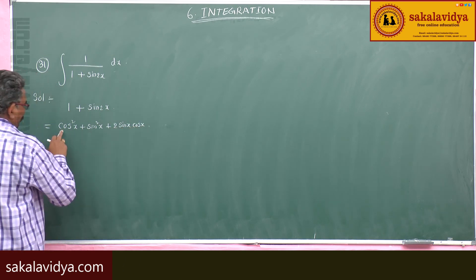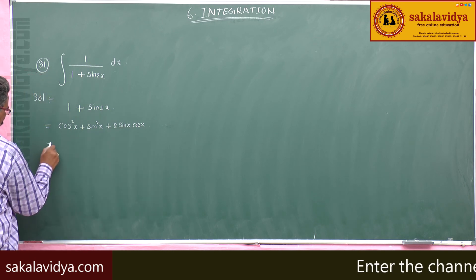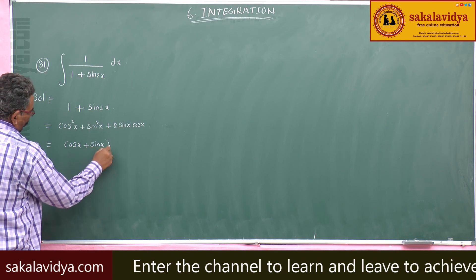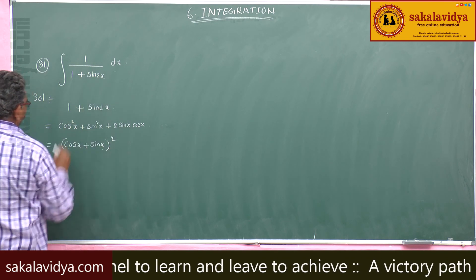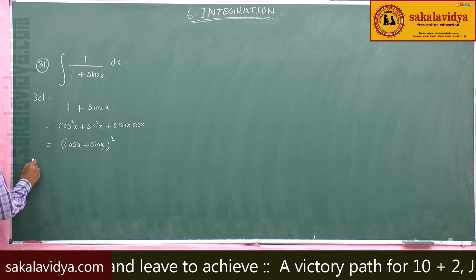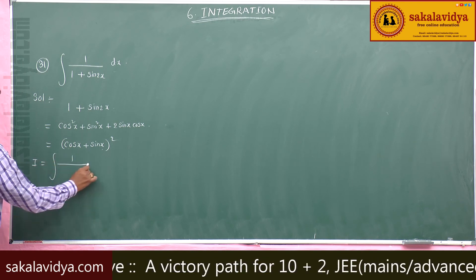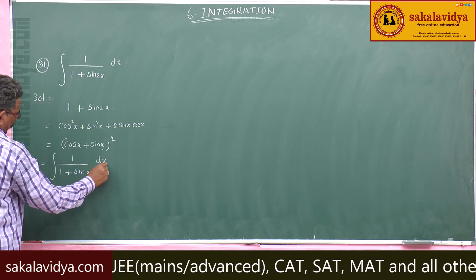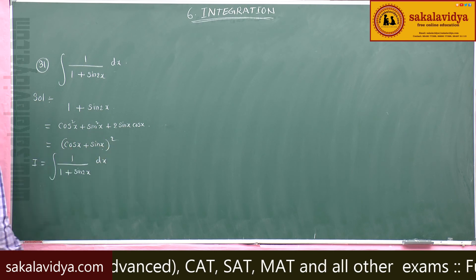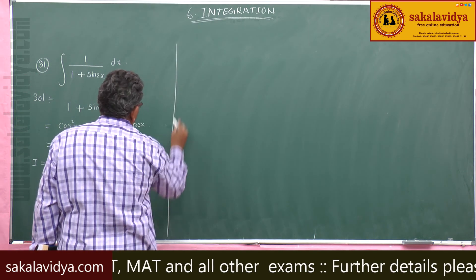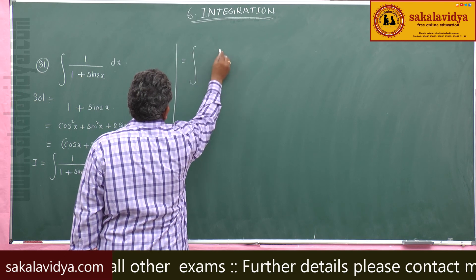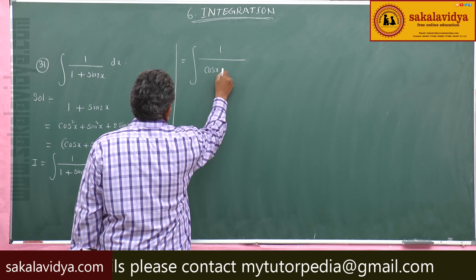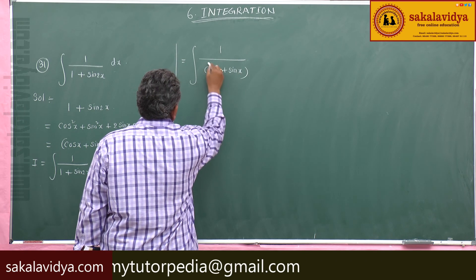This is in the form of a square plus b square plus 2ab. So this is nothing but cos x plus sin x whole square.